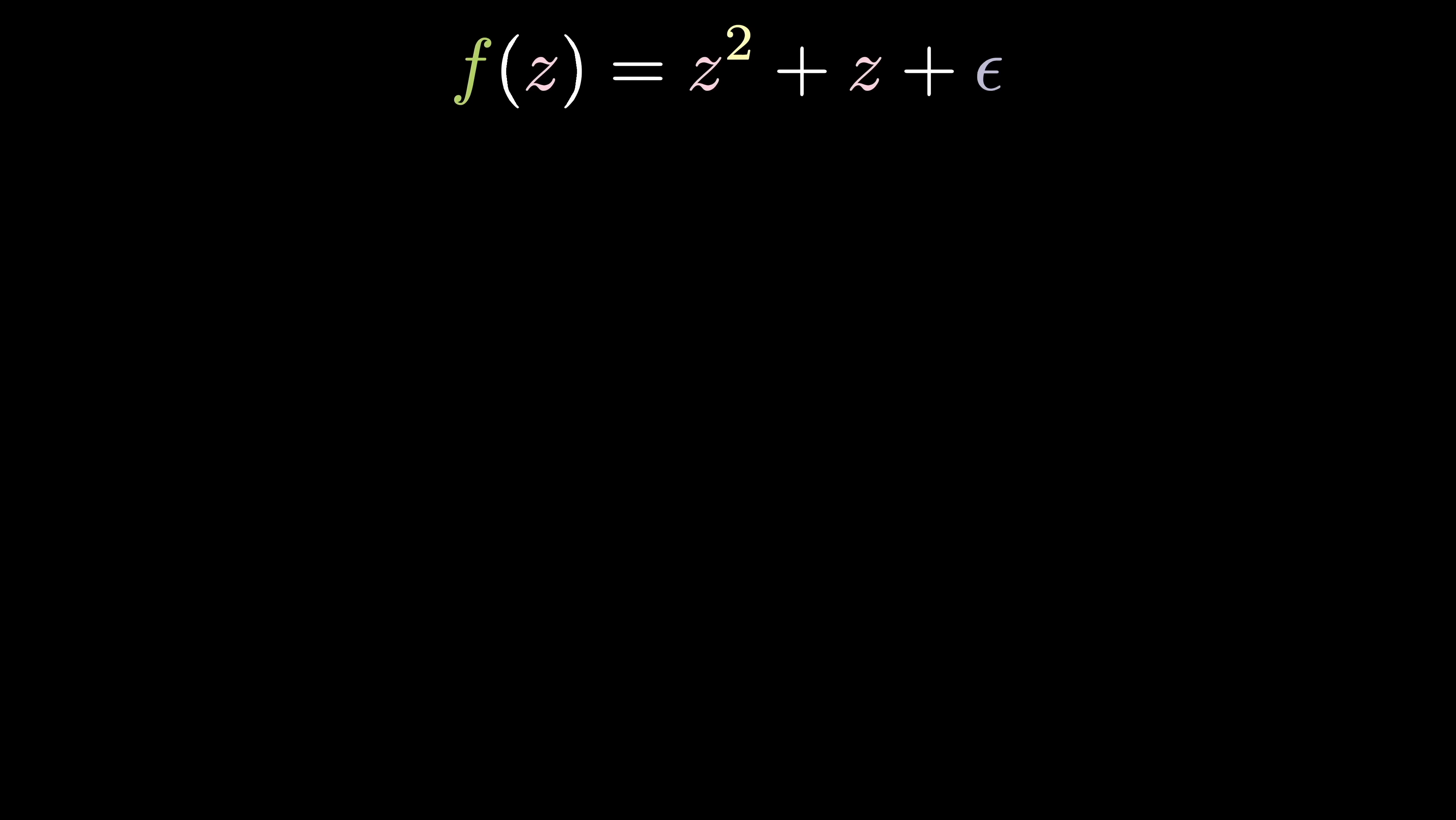What it really is, is an update function that gives us the next step in our calculation. Let's denote the ith step z sub i, replacing f(z) with the next step z sub n plus 1, and replacing z with the current step z sub n. This gives us z sub n plus 1 equals z sub n squared plus z sub n plus epsilon, and the initial step z sub 0 equals 0.